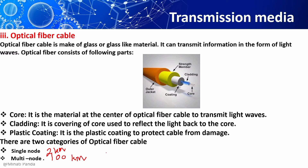A fiber optic system consists of a transmitter, which produces light signals and encodes them for transmission; the optical fiber, which is the medium for transmitting the light pulses; an optical receiver, which receives the transmitted light pulses; and an optical regenerator, necessary for long distance communication.